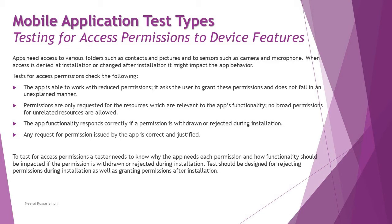Tests should be organized to check that the app is able to work with reduced permissions, and that it asks the user to grant permissions without failing in an unexplained manner. It should always display information on screen — for example, if you don't allow camera access, you cannot take a picture or make a video conference using the app. If you don't allow gallery access, you cannot upload a picture but can still take one using the camera. Users should be clearly informed what happens if they deny access.